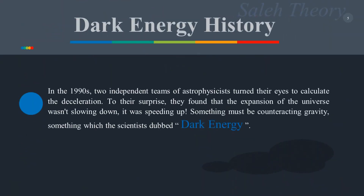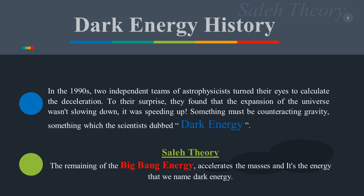In the 1990s, two independent teams of astrophysicists turned their eyes to calculate the deceleration. To their surprise, they found that the expansion of the universe wasn't slowing down — it was speeding up. Something must be counteracting gravity, something which scientists dubbed dark energy. But Salih theory has a different explanation: the remaining energy of the Big Bang accelerates the masses, and it is this energy that we name dark energy.